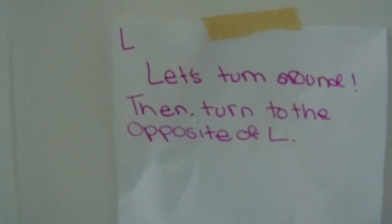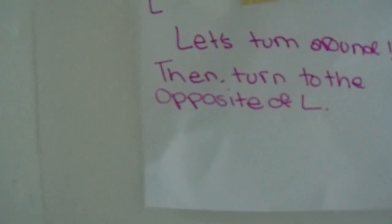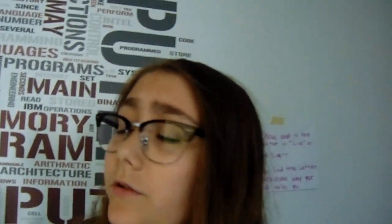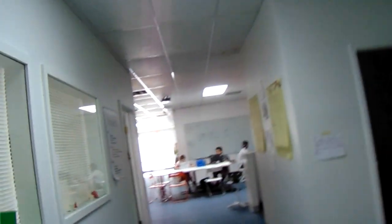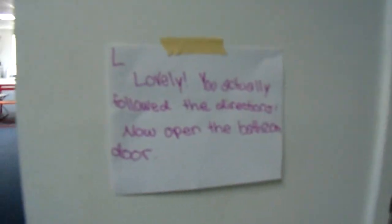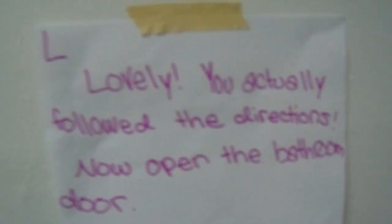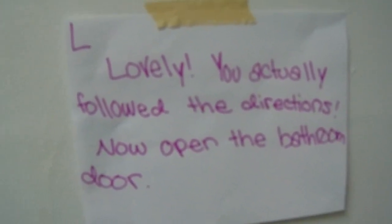Let's turn around, then turn to the opposite of L. I would assume that the opposite of L means right, because that's R — that's your right hand. So we need to go down and then turn right. The second L, I believe, is what we found. Lovely, you actually followed the directions. Yes, I did.